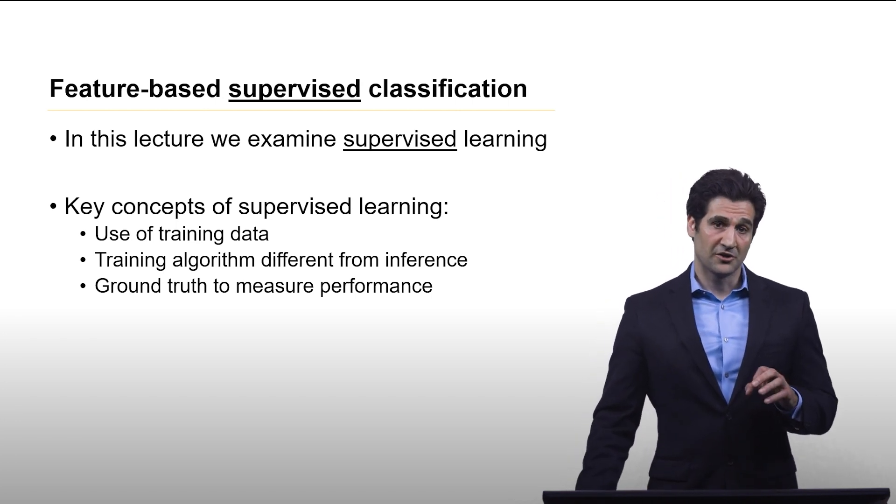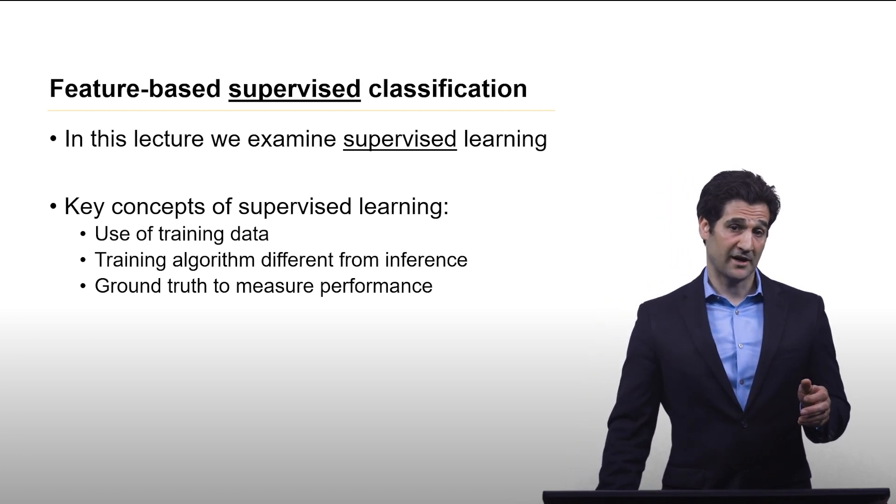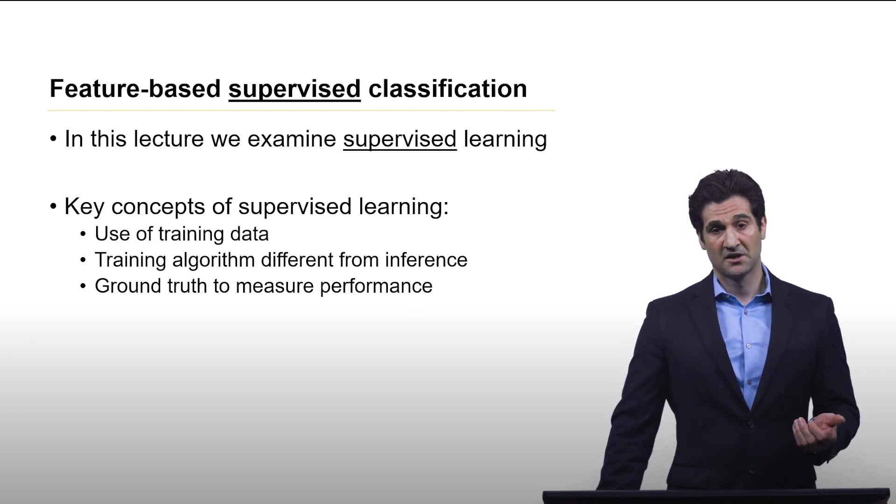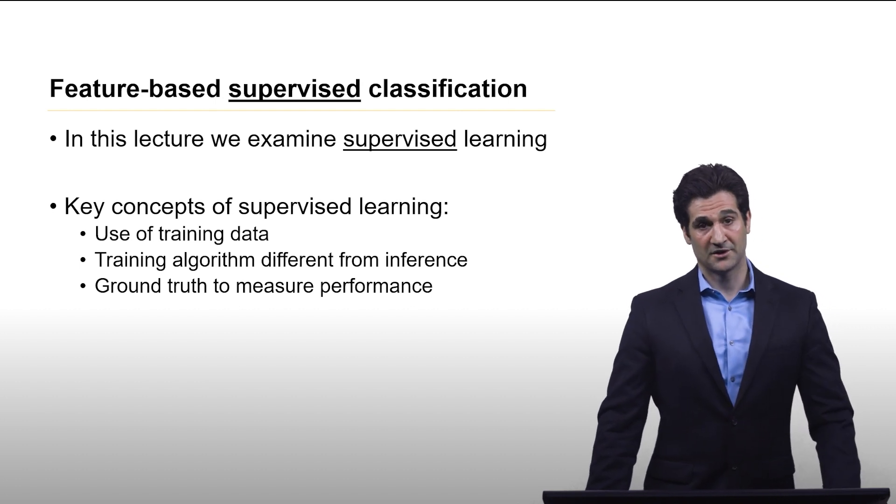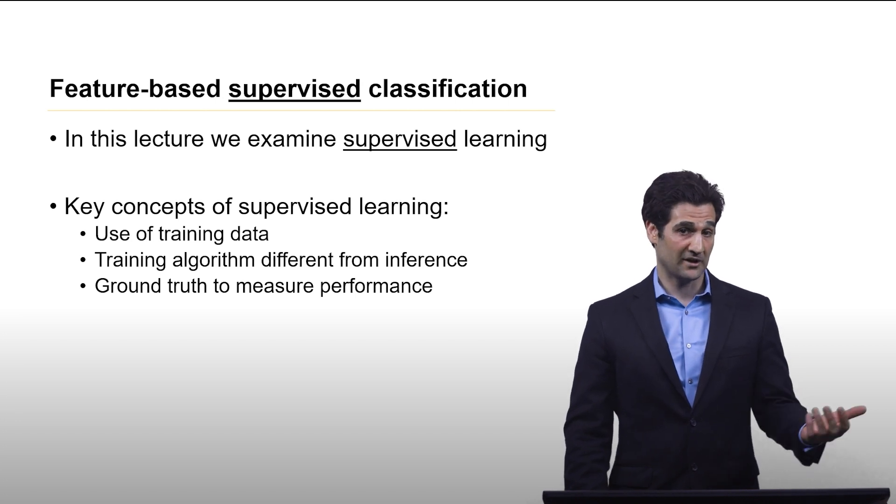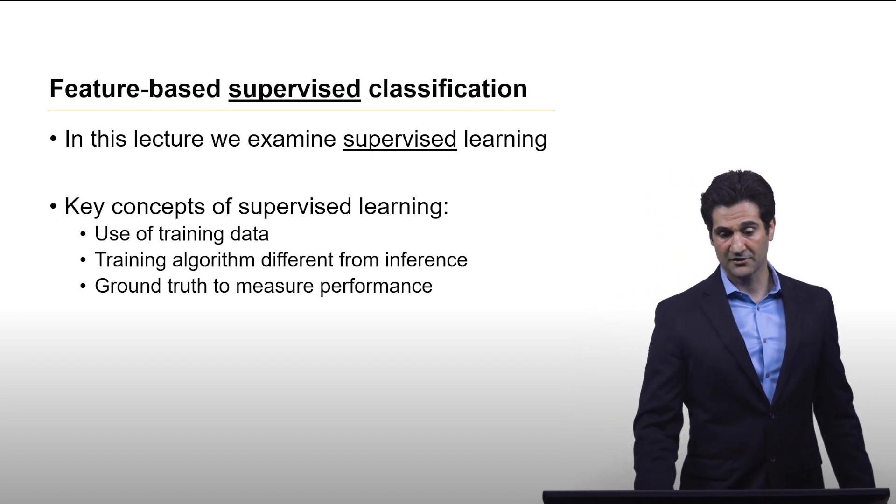There's another aspect of supervised learning: the use of a second data set, often called a test set, to evaluate the performance of the model. For that data set, we also have what's called ground truth, where we actually know what the right answer is.